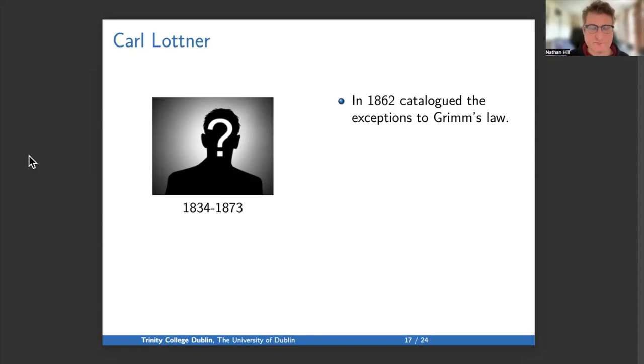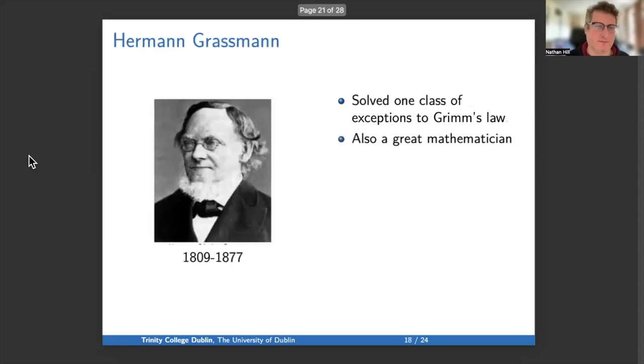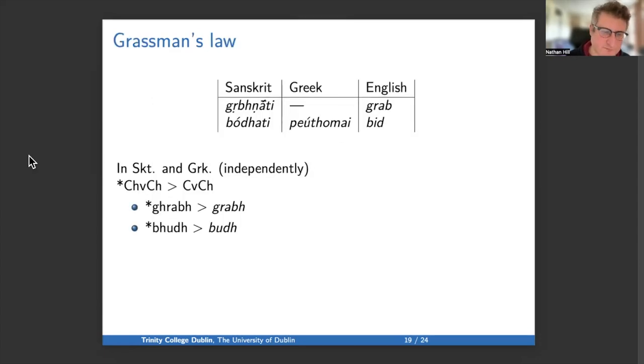So two of his readers were then able to find patterns in these exceptions. So one was Hermann Grassmann, 1809 to 1877. So he solved one of the classes of exceptions to Grimm's Law and is also known as a great mathematician. So here is Grassmann's Law. First, let's look at the exceptions. So we have grbhnati in Sanskrit, cognate with grab in English. Now, the problem here is the g in Sanskrit corresponding to a g in English. We should have a gh in Sanskrit corresponding to a g in English. And then in another example we have bodhati, cognate with peuthomai in Greek and bid in English. And here the b in English should have a bh as its cognate in Sanskrit.